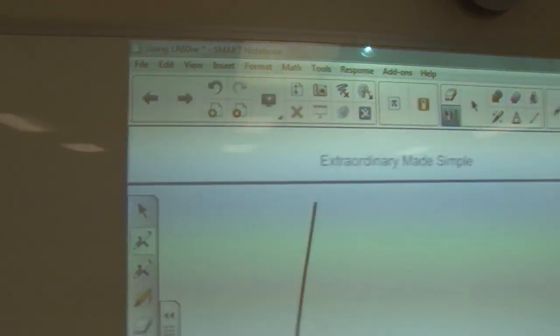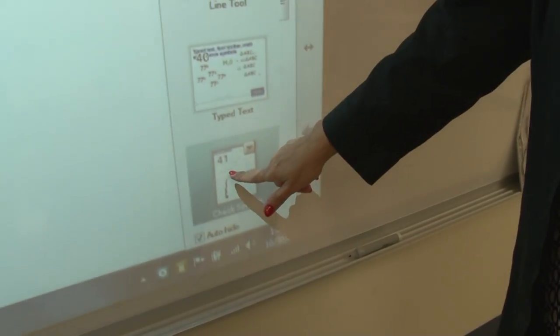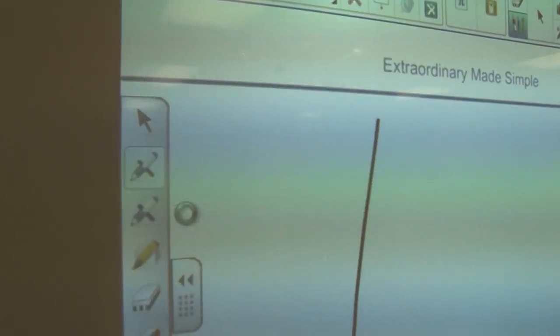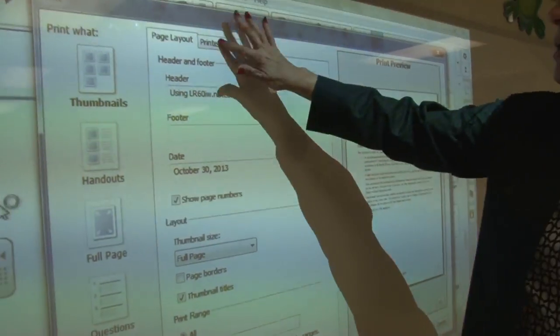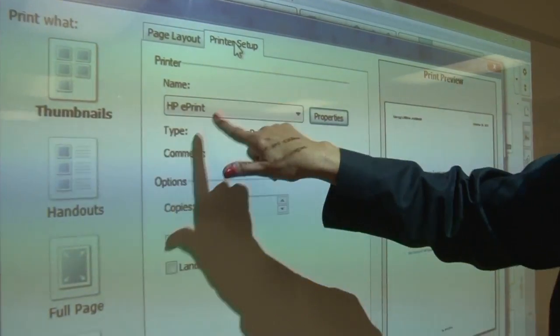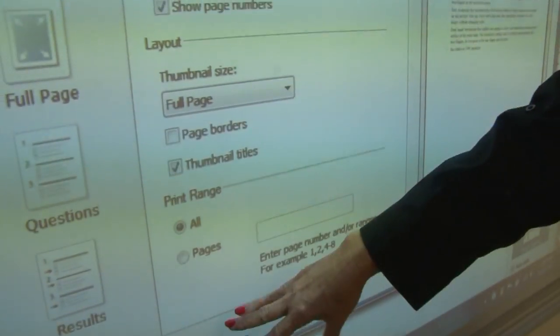Now we're going to go to file. Now before I go to file, I want to know what page this is. This is page 41. So I want you to see what page 41 looks like. So we're going to go to file, print. And when we go to file, print, I want to make sure I've chosen a printer. And I have a printer. And here is my printer choices.